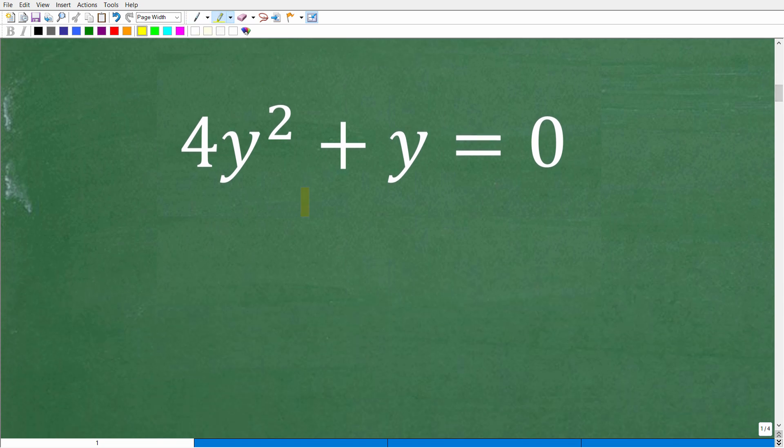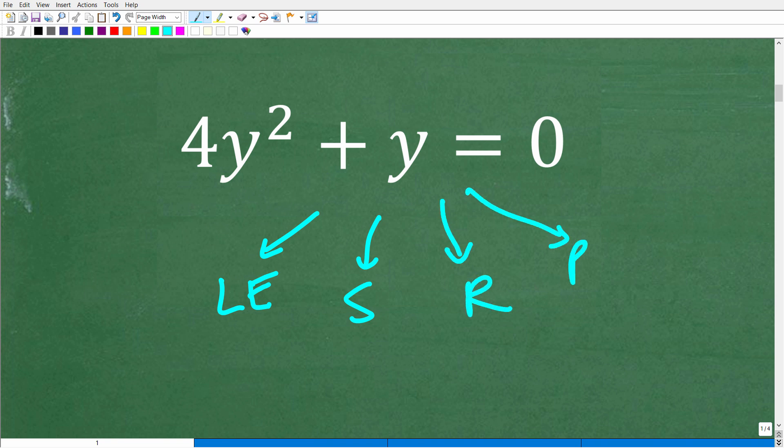And the first thing is that we need to recognize what type of equation this is. So in algebra, there's all different sorts of types of equations. You have linear equations, you have systems of equations, you have radical equations, you have rational equations, you have quadratic equations, exponential equations, and the list goes on and on and on.